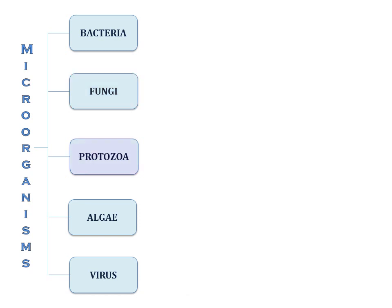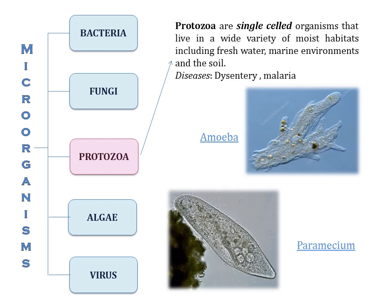The next microorganism group is protozoa. Protozoa are single-celled organisms that live in a wide variety of moist habitats, including fresh water, marine environments, and soil. Examples are Amoeba and Paramecium. The diseases caused by protozoa are dysentery, which is diarrhea, and malaria.